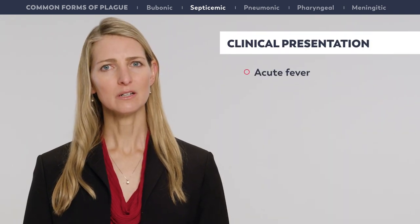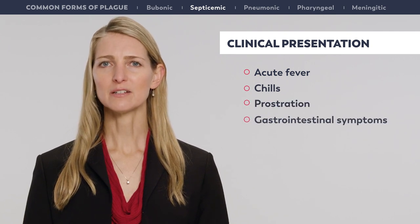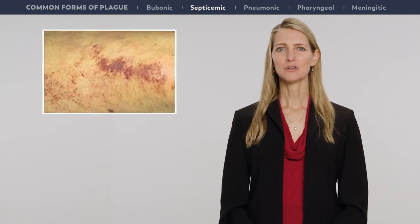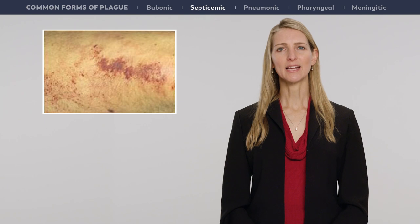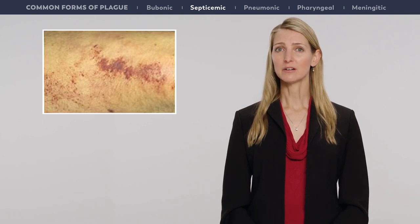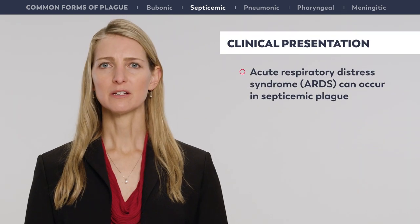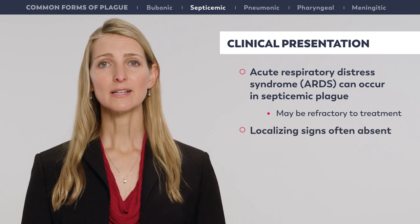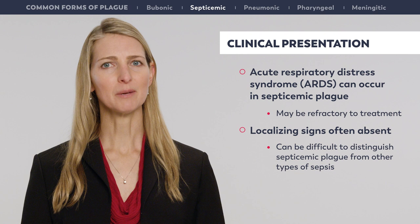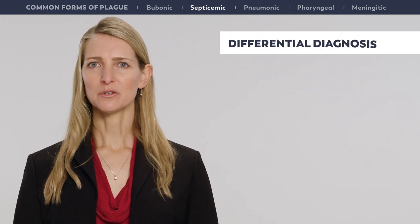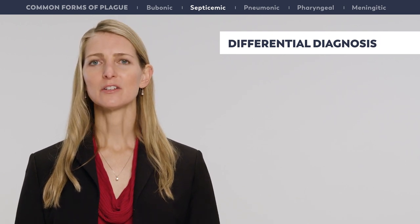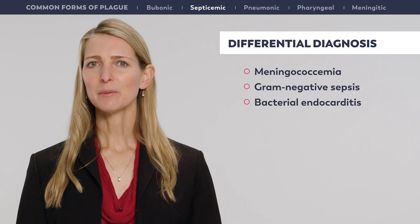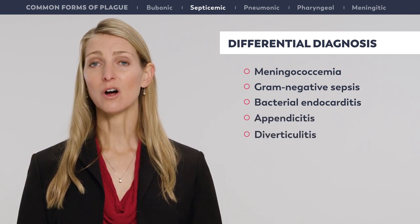Presenting symptoms include acute fever, chills, and prostration, often accompanied by gastrointestinal symptoms such as nausea, vomiting, diarrhea, and abdominal pain. The course of illness is fulminant. Patients develop disseminated intravascular coagulation, or DIC, with petechiae and ecchymosis, refractory hypotension, renal failure, obtundation, and other signs of shock. Acute respiratory distress syndrome, or ARDS, can occur in septicemic plague and may be refractory to treatment. Localizing signs are often absent and it can be difficult to distinguish septicemic plague from other types of sepsis. Differential diagnosis includes meningococcemia, gram-negative sepsis with other pathogens, bacterial endocarditis, and as abdominal pain is a common feature, both appendicitis and diverticulitis could also be confused with septicemic plague.